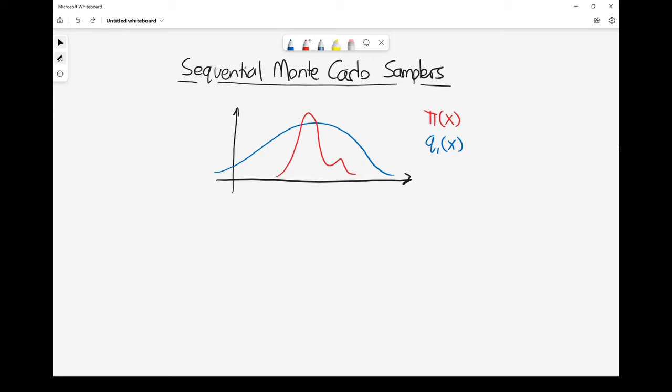In the previous two videos, we've said we are interested in estimating things associated with this probability distribution, which we're calling the target. We've drawn an example 1D target in red. So far we've essentially just done standard importance sampling, generating samples from some proposal which we've denoted Q.